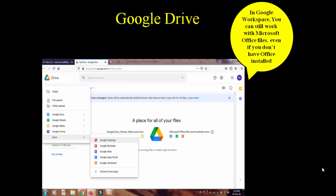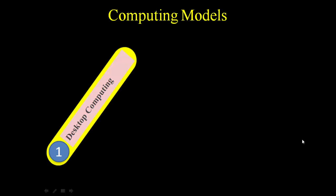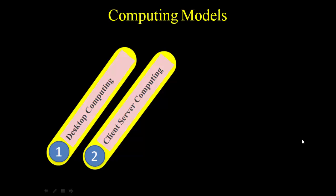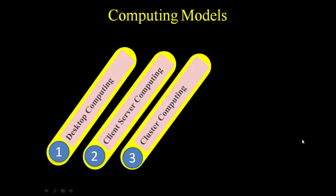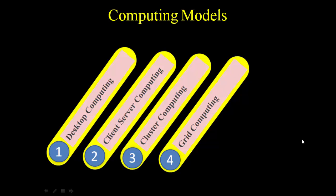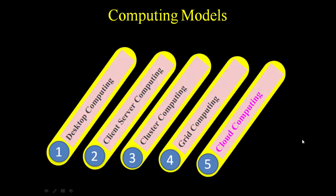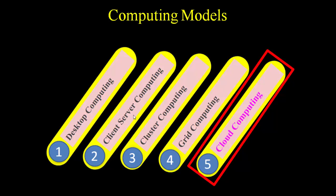But you must understand the basic concept of the cloud, and to understand the basic concept of the cloud you must understand different computing models. So let us discuss different computing models. There are a number of computing models: first is desktop computing, second is client-server computing, third is cluster computing, fourth is grid computing, and last is cloud computing. To understand cloud computing you must first understand each of these models, then you can easily understand the concept of cloud computing.